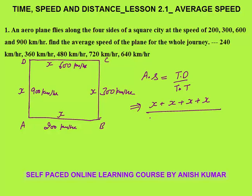Time equals distance divided by speed. From A to B: distance x at speed 200 km/h. B to C: distance x at speed 300. C to D: distance x at speed 600. D to A: distance x at speed 900.